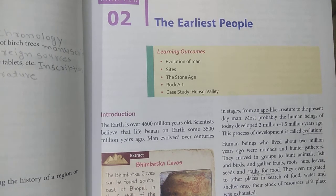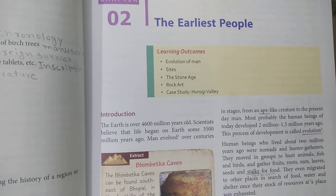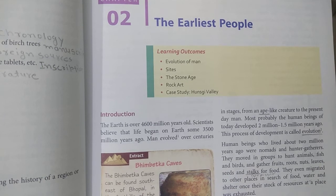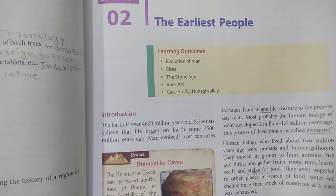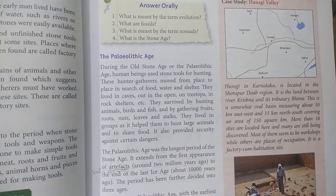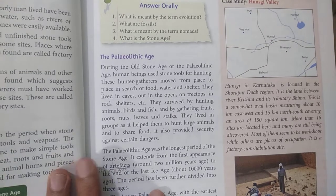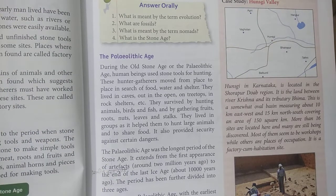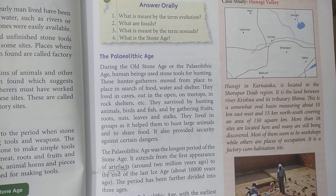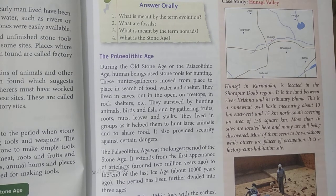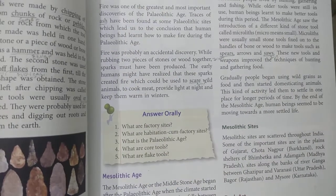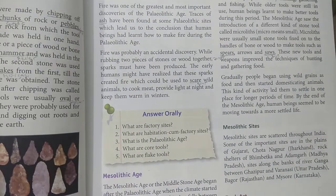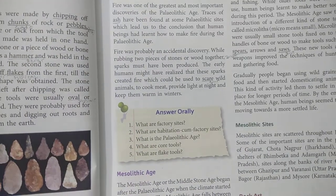Good morning, students. As you know, your second chapter of history is going on, which is named 'The Earliest People.' I told you about the Stone Age. The Stone Age is divided into three parts: the Palaeolithic age, Mesolithic age, and Neolithic age. I have given you a lot about the Palaeolithic age.